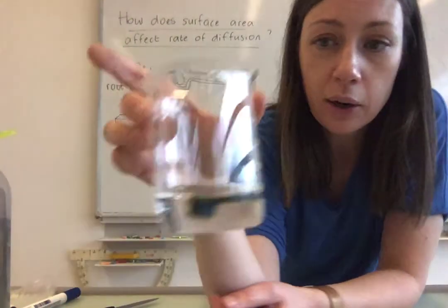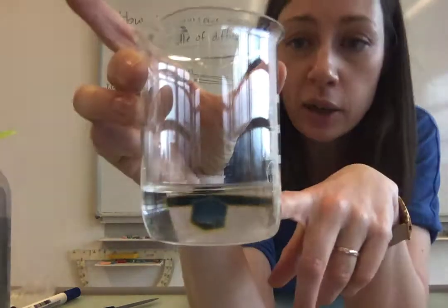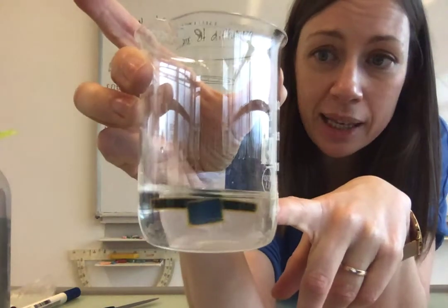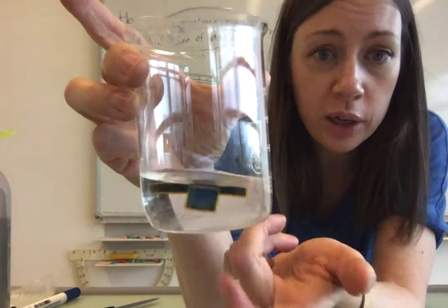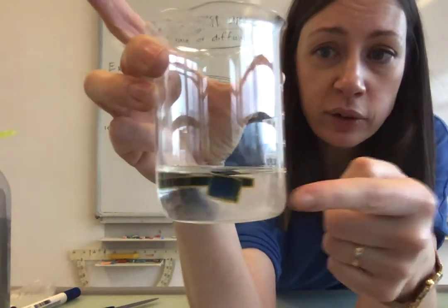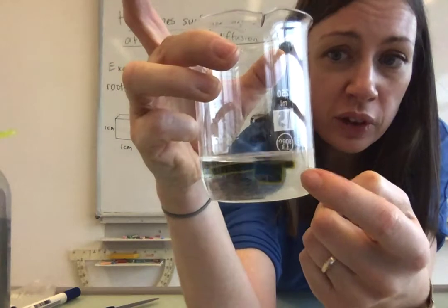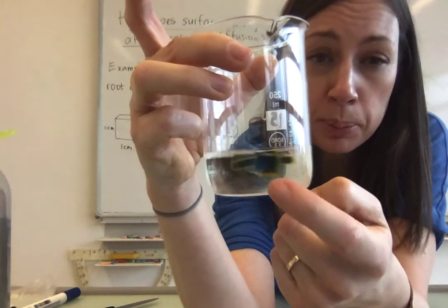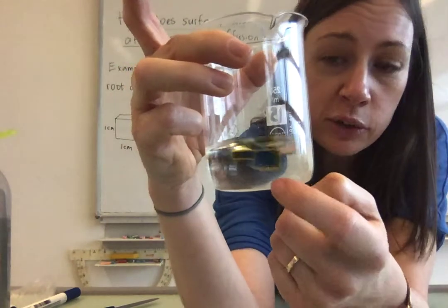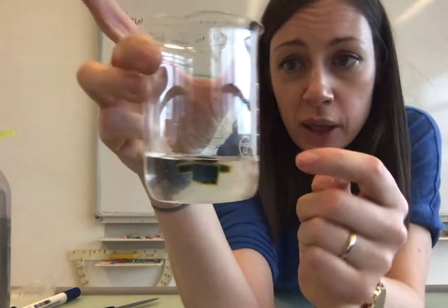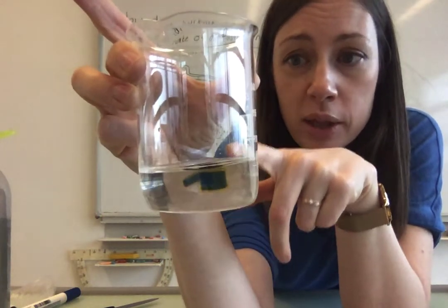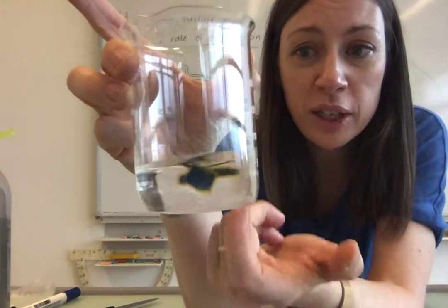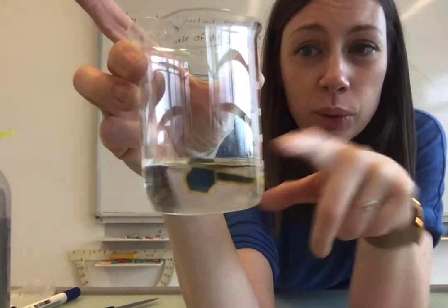Meanwhile I'll explain what's happening here and why we have a change in color. Like I said before, the agar has got a pH, an alkali pH in it. The vinegar has got an acidic pH. So as the vinegar diffuses into the agar, the pH changes. And the reason we can see that pH change is because there is an indicator in there. So the indicator will change color when the pH decreases as the vinegar diffuses into the agar.